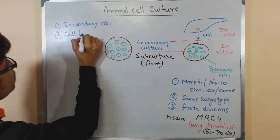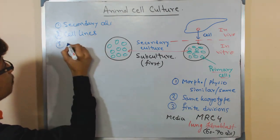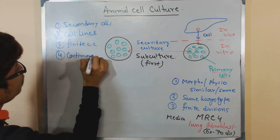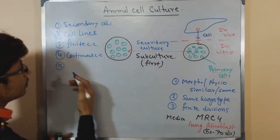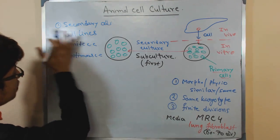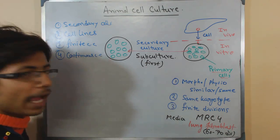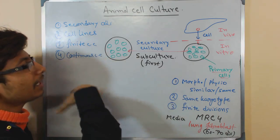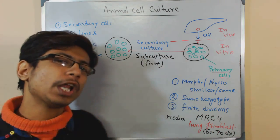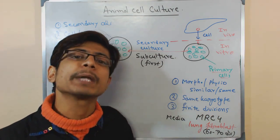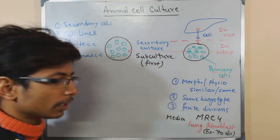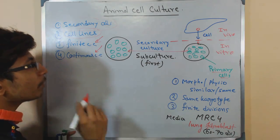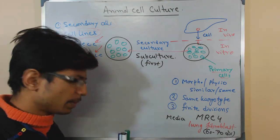Secondary culture is also called cell lines. It can be a finite cell culture or a continuous cell culture, and so on — many different names. All of these names refer to secondary subculture, not primary cells, since primary culture has only one name. The rest are secondary. Any cell line or secondary cells can be of two major types: finite and continuous, though other types like restricted also exist.